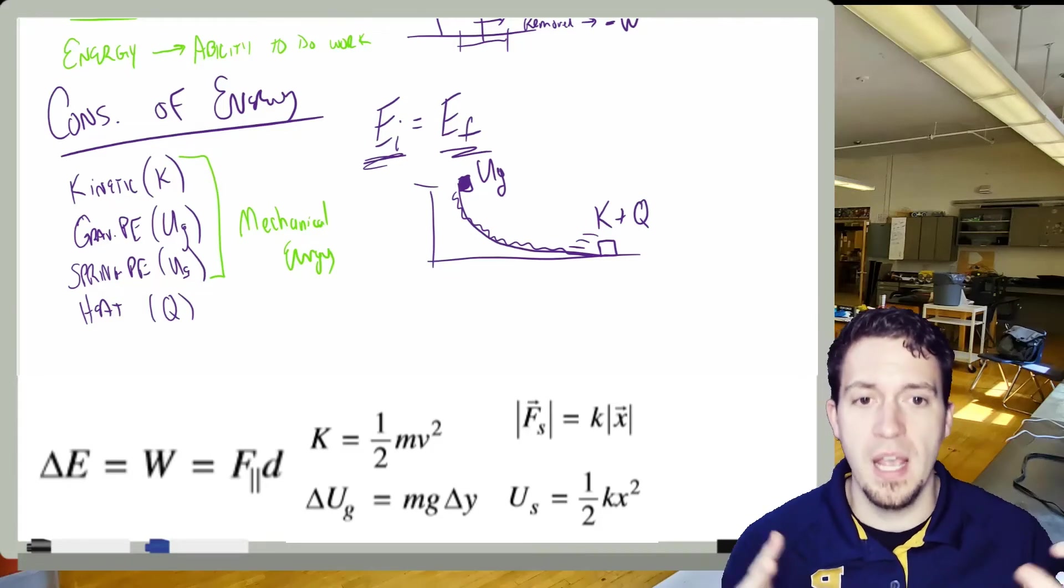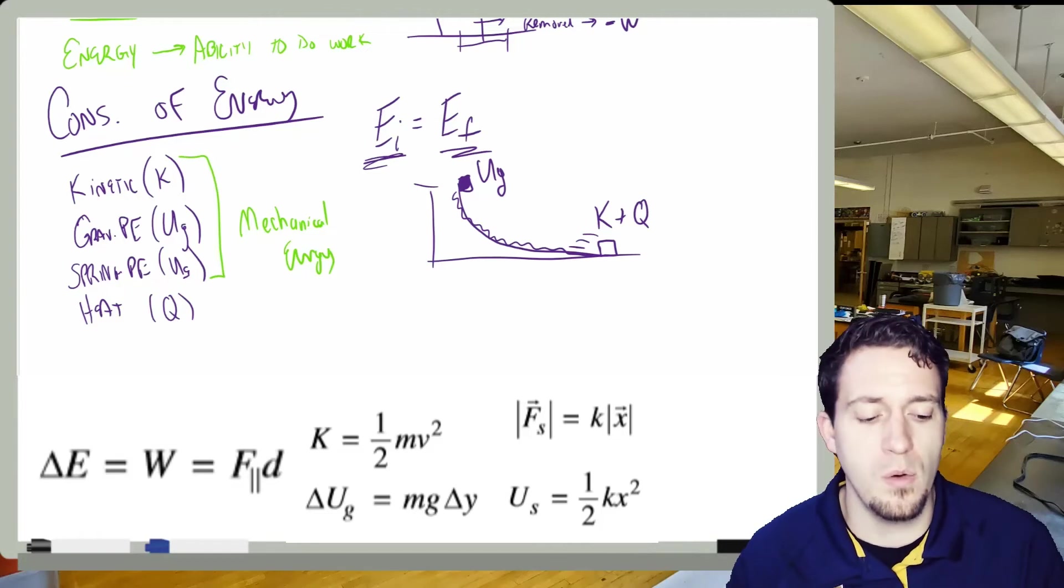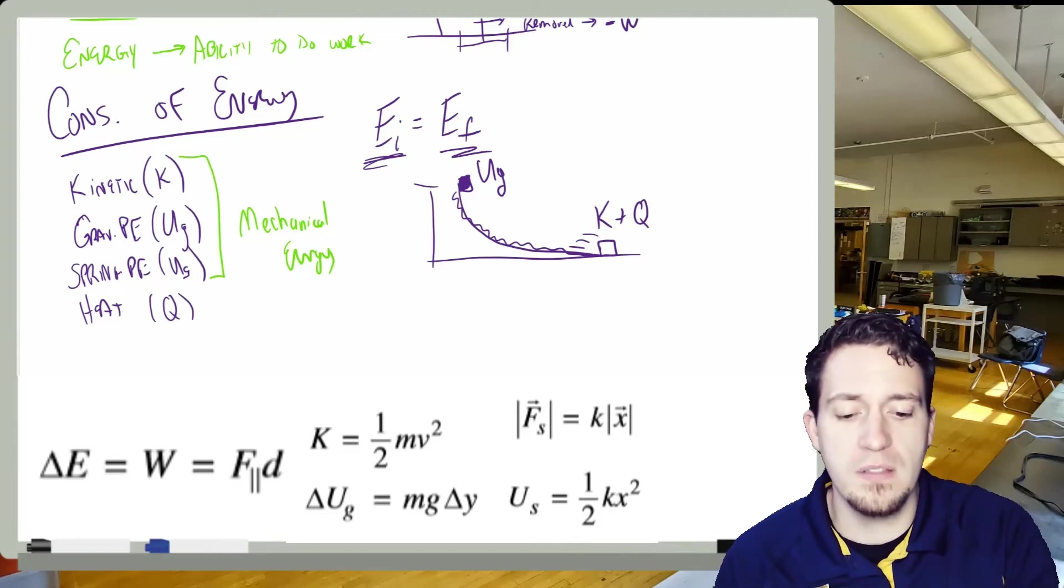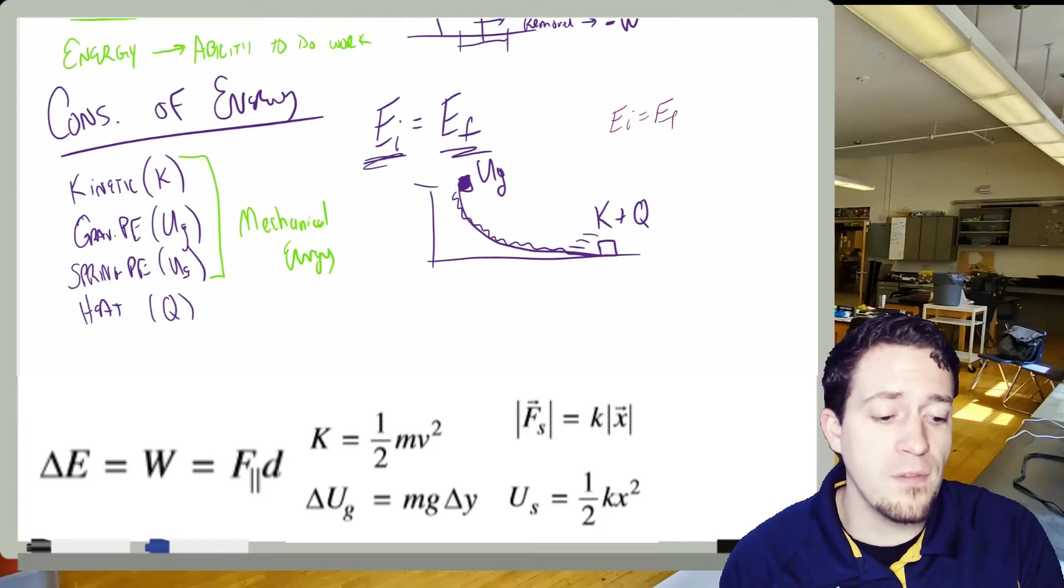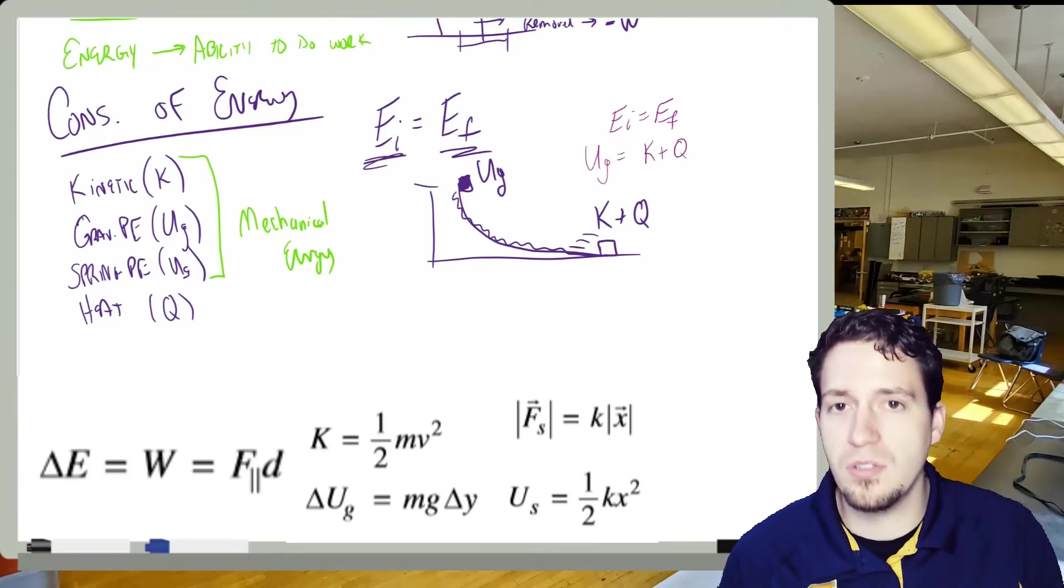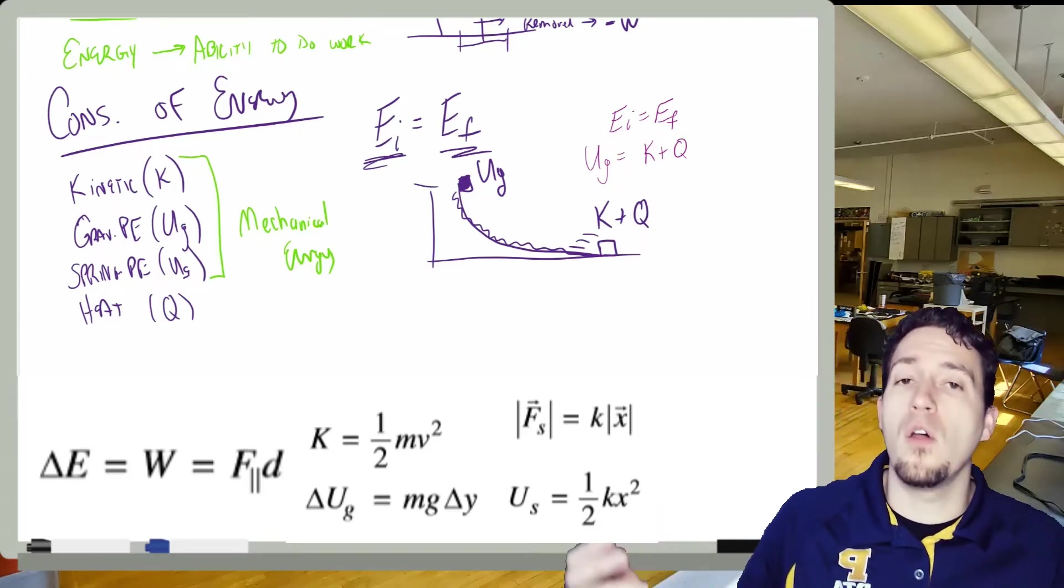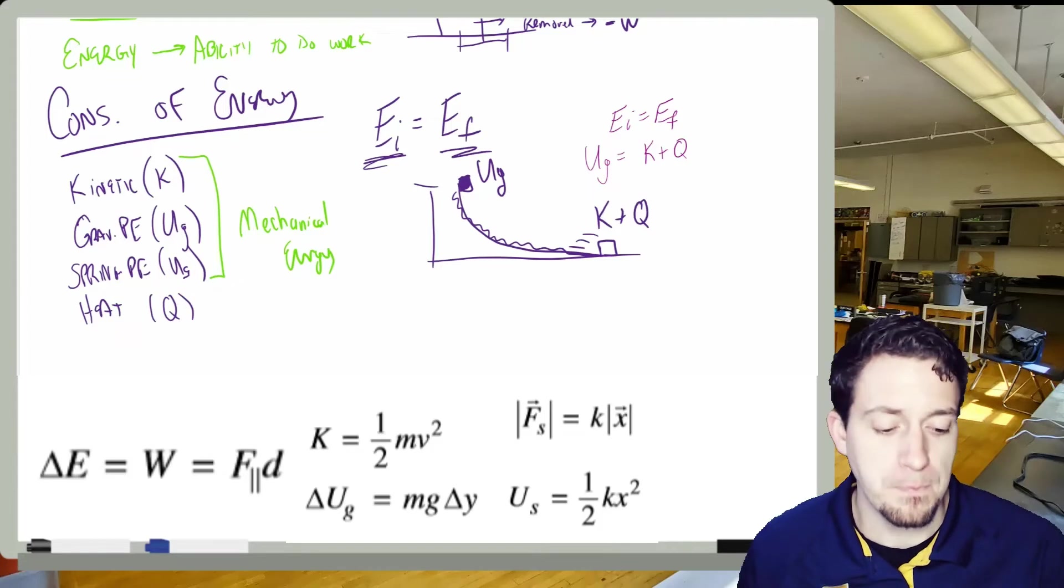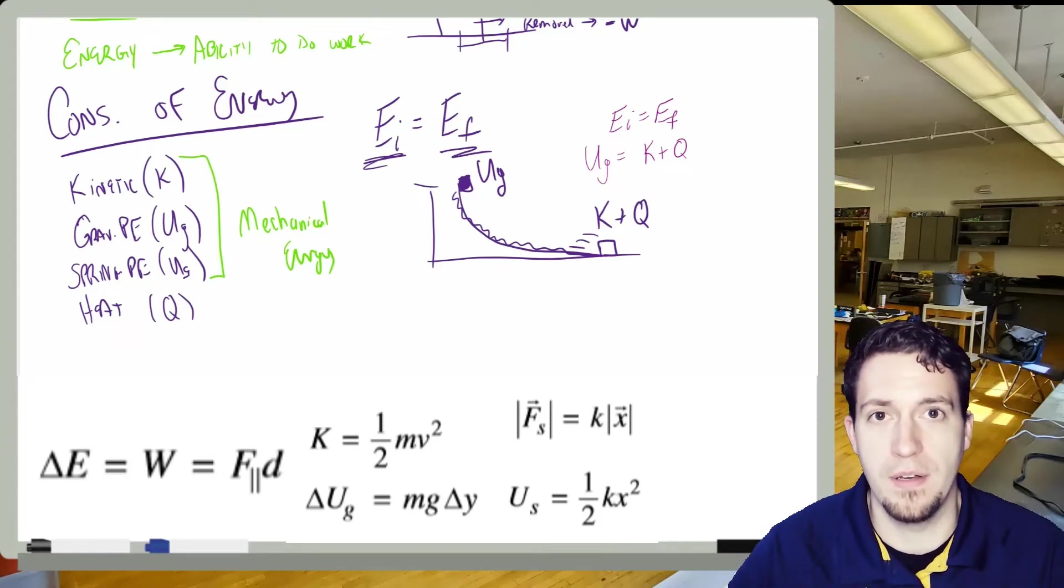So I'm going to solve this, because if my system is more than just a block, if my system is the block on the ramp and the world, if I was going to set this up to solve this, EI, EIF, because in the beginning, it's all gravitational potential, and then it becomes kinetic plus heat. And I can use that to solve depending on what they're asking me to do. Are they asking for the height of the ramp? Are they asking me for the speed at the bottom of the ramp? It really depends on the given scenario.